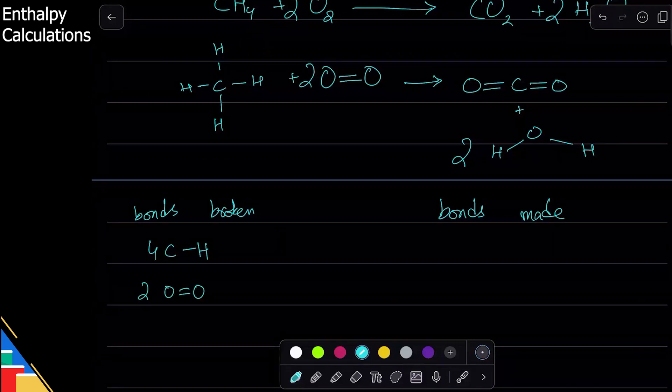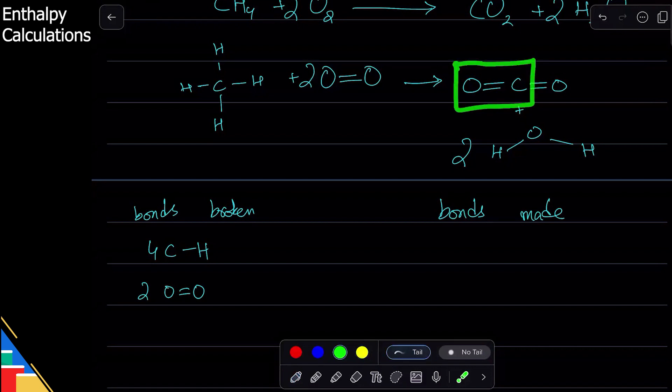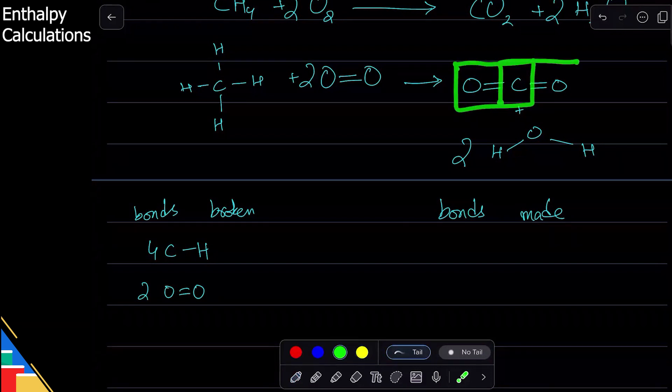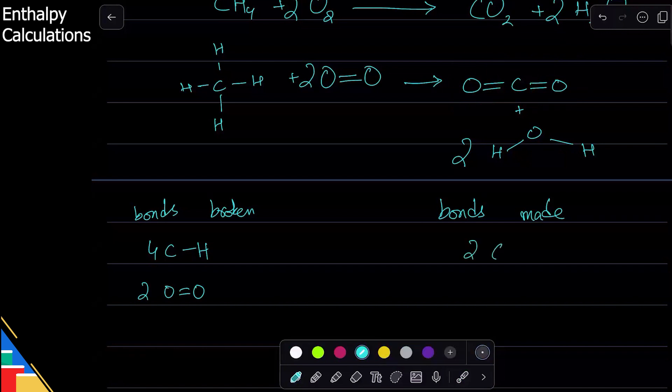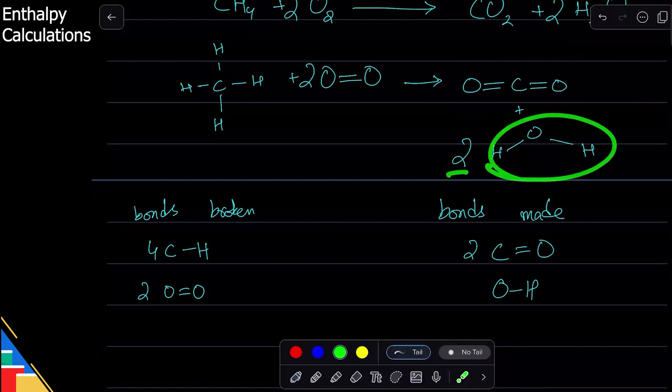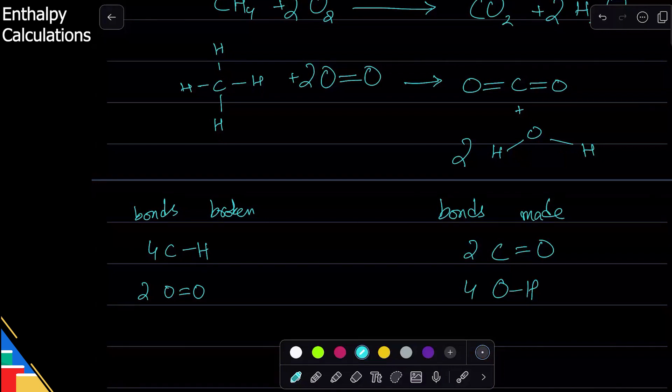Similarly, bonds made. One bond made is between carbon-oxygen double bond, and the other is carbon-oxygen double bond here, so two carbon-oxygen double bonds. Similarly, in the water molecule, there's an O-H bond here and an O-H bond here. We have two total water molecules, so two times two, that is four O-H bonds.